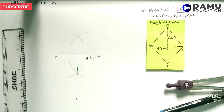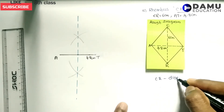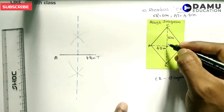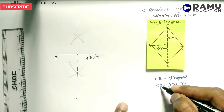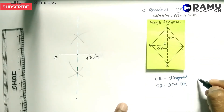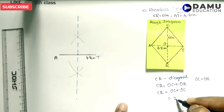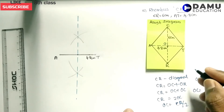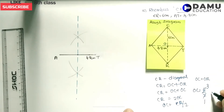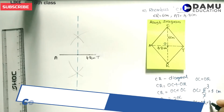There is 6 centimetres for diagonal CR. Let us take the intersection point as O. CR will be equal to OC plus OR, and OC and OR will be equal. So 2 times OC equals CR, therefore OC equals CR divided by 2. CR is 6 centimetres divided by 2 gives us 3 centimetres. So OC will be equal to OR will be equal to 3 centimetres.